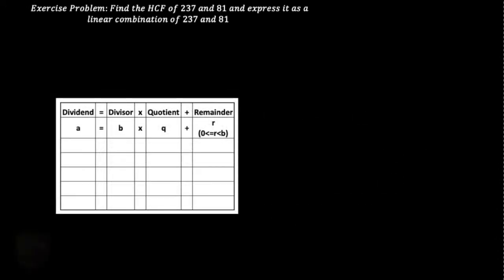Hello friends, welcome to this session of problem solving on Euclid's division algorithm to find GCD of two positive integers. We have gone through the theory and concepts of Euclid's division algorithm to find the GCD of any two given integers. Now in this session we are going to take up an example problem, solve it, find the GCD of two given positive integers, and express that GCD as a linear combination of the two given numbers.